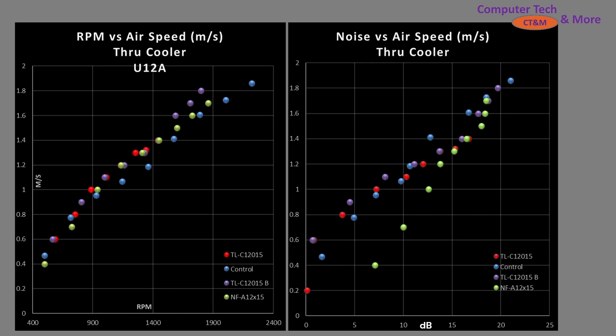Back to the regularly scheduled program. The first, the left graph here is airspeed versus RPM. It's basically a blade efficiency graph and the fans are right in line with my control fan. It's almost equivalent, they just don't have the same sort of top end. On the right side is airspeed versus noise and here is where they do really quite well. They almost line up with my control fan so that is a pretty impressive result actually.